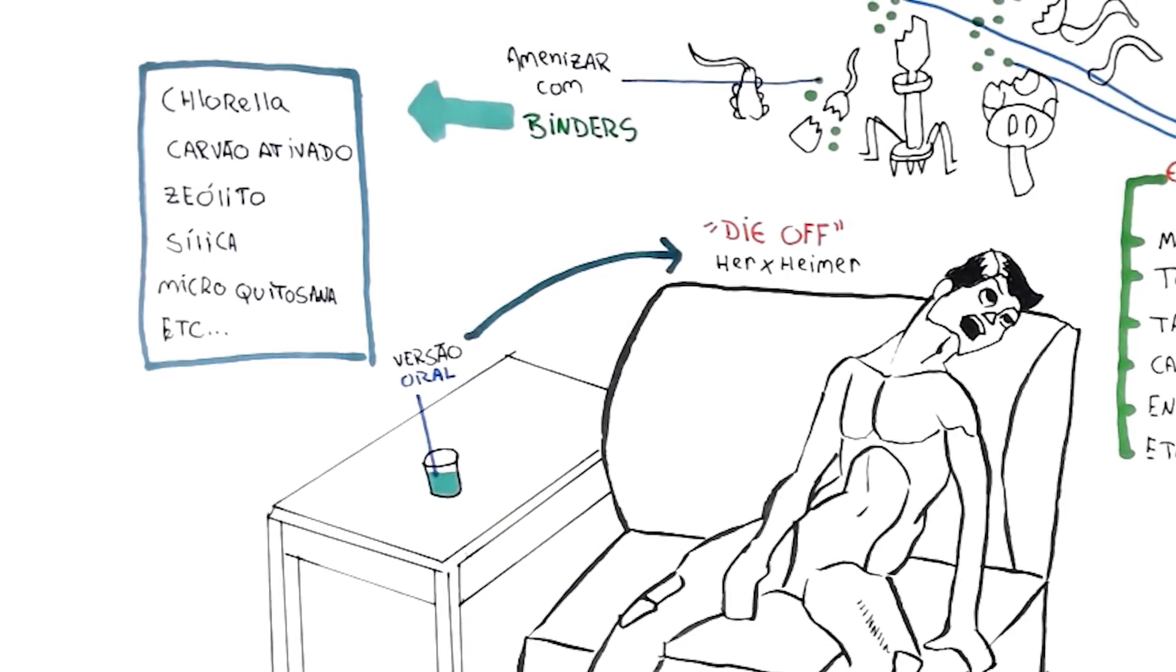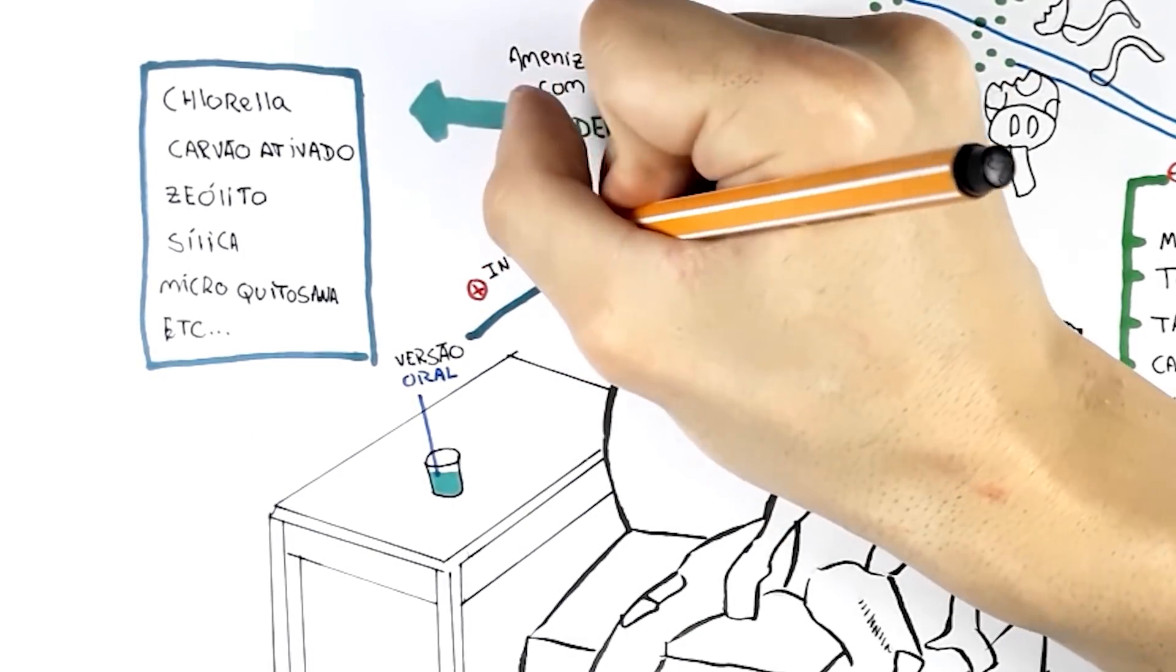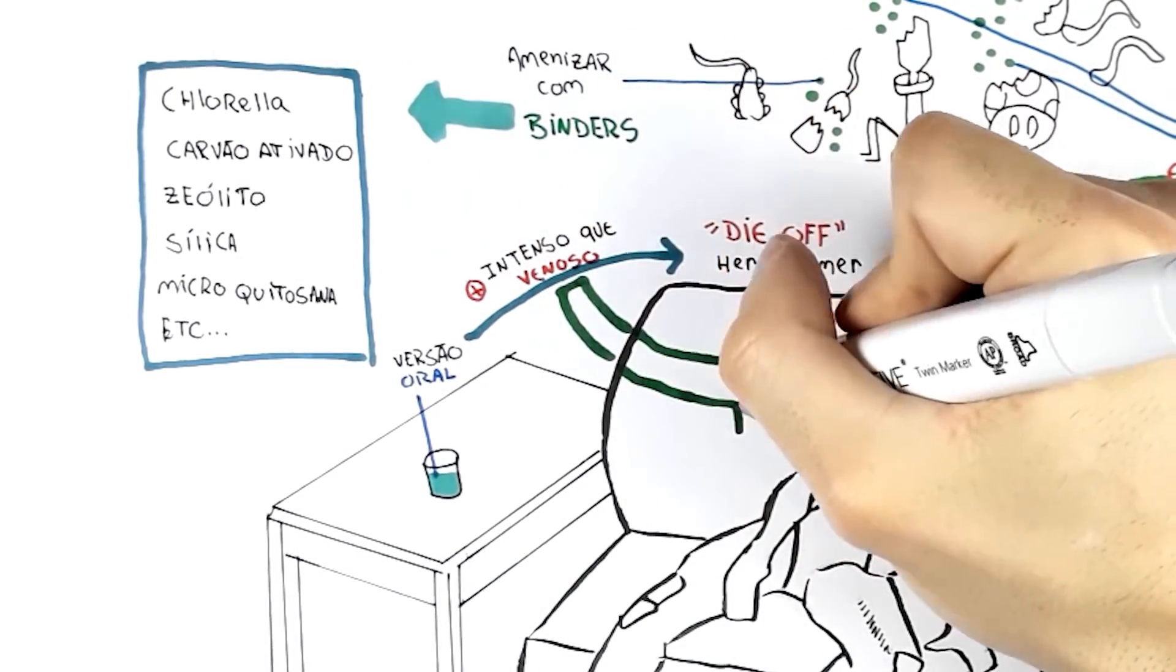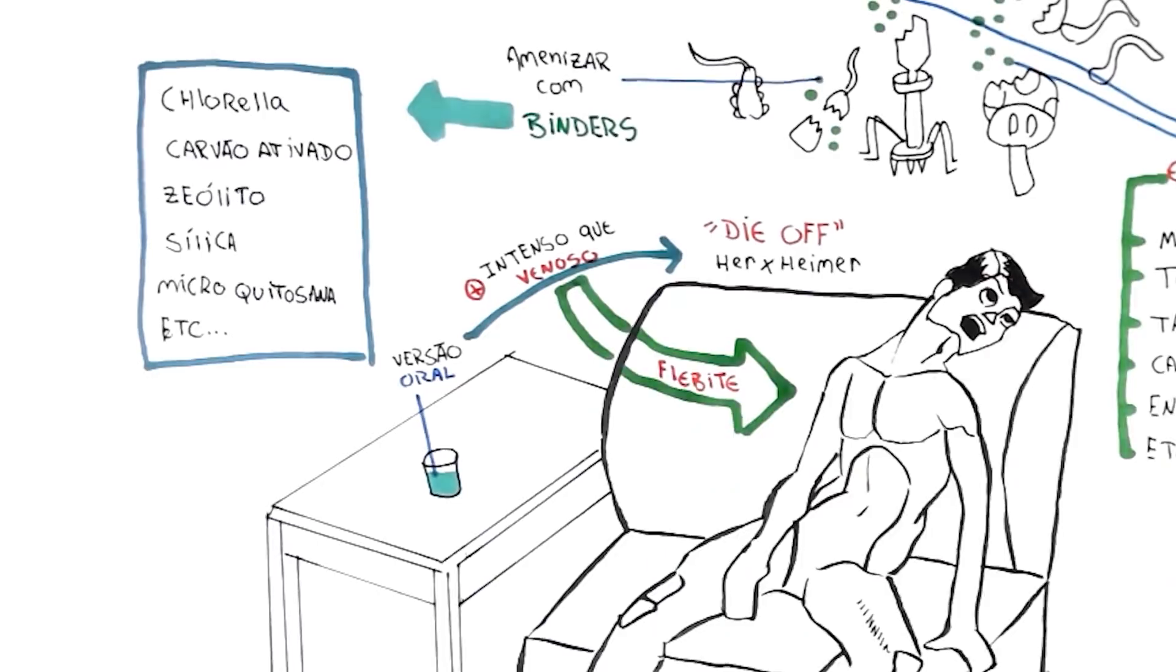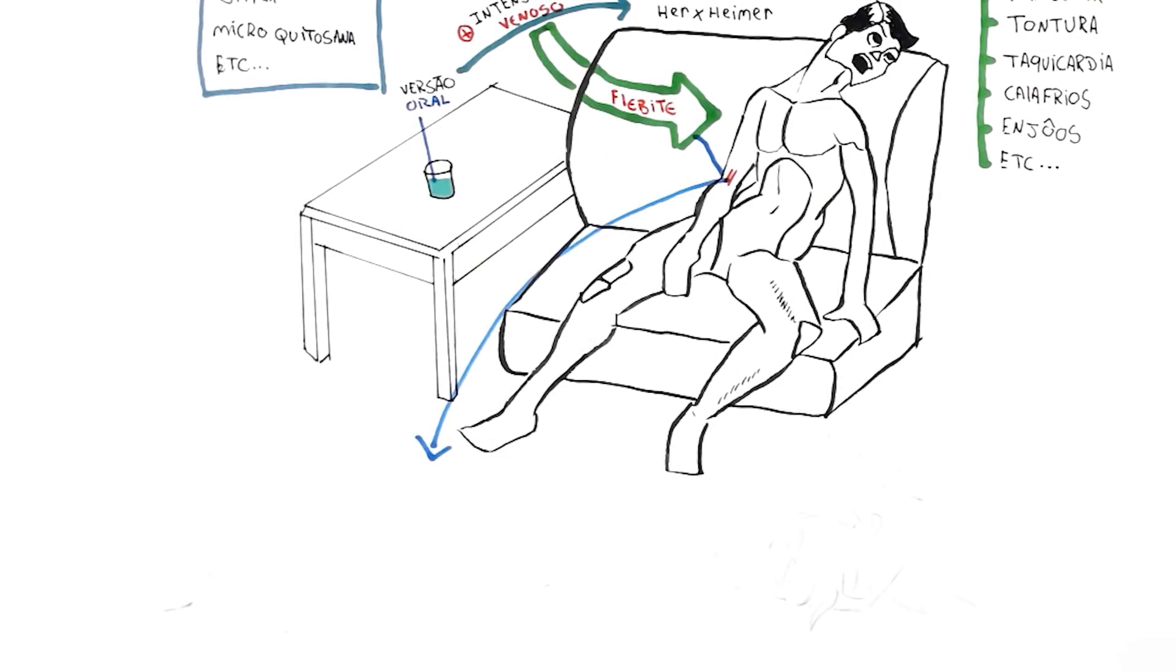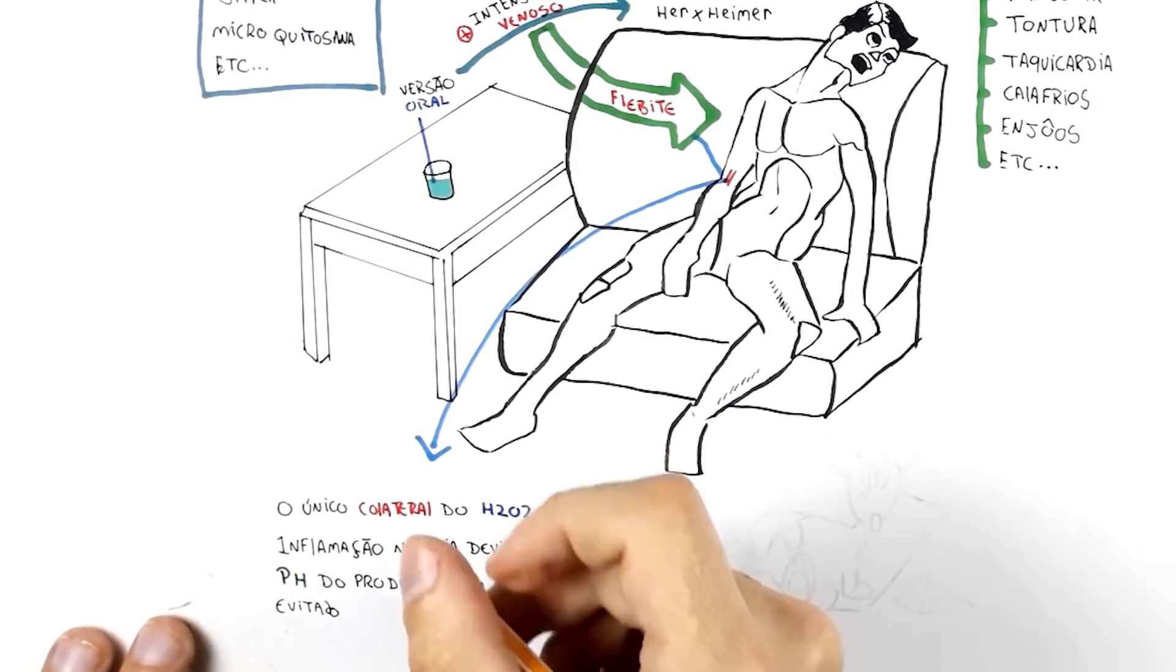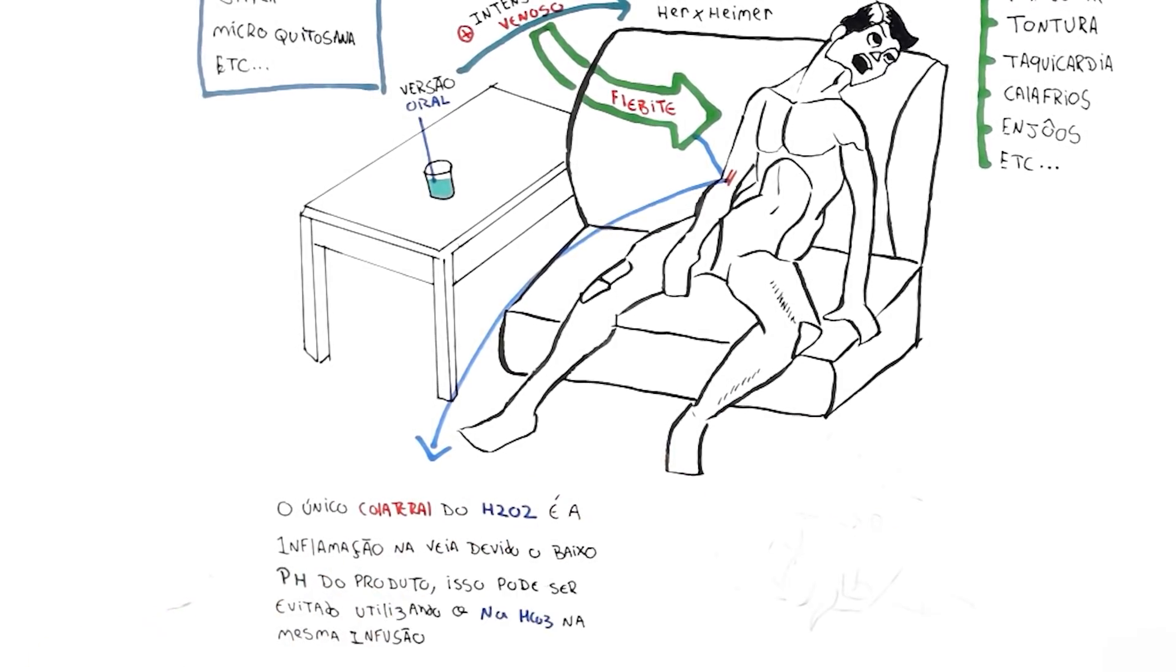By the way, oral hydrogen peroxide therapy usually has a much more intense Herxheimer than intravenous. And speaking of intravenous, its only complication is phlebitis, which is inflammation in the veins caused by the low pH of the product, and which can be mitigated by using sodium bicarbonate in the same infusion.